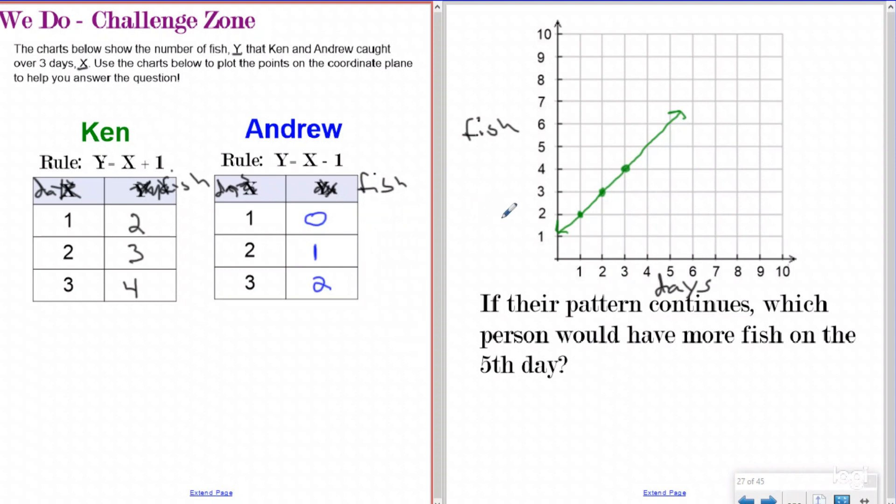Now we want to plot those points because that's what our question told us to do. So my first point is going to be one, zero. Then I'm going to have two, one. Then I'm going to have three, two. And you can see right here again, I have a straight line that I am forming.